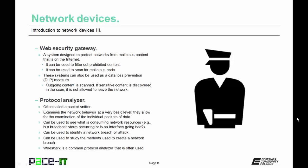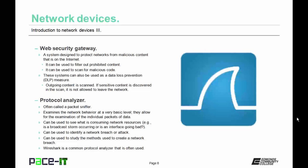This helps entities keep their secrets within their own networks. Not really a device on its own, but we need to discuss it anyway, is the protocol analyzer, often called a packet sniffer. It examines the network behavior at a very basic level, allowing examination of the individual packets of data flowing on the network. They can be used to see what is consuming network resources — such as whether a broadcast storm is occurring or an interface is going bad. Protocol analyzers can also be used to identify a network breach or attack, and to study the methods used to create that breach.